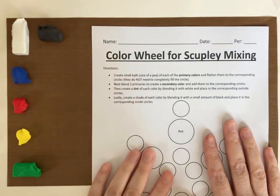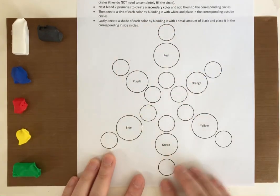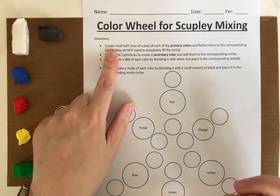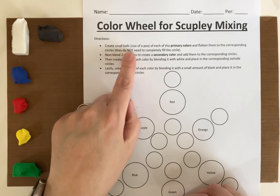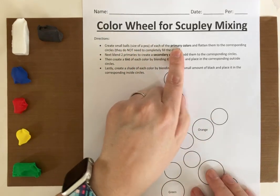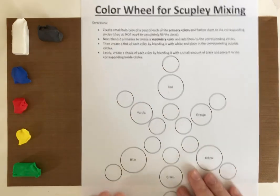So for today, like I said, we're going to be creating the color wheel, so I've included the color wheel right here. So for the first part we're going to create small little spheres, little balls about the size of a pea for each of the primary colors, and then you're going to flatten them to the corresponding circles, and they don't have to completely fill the circle.